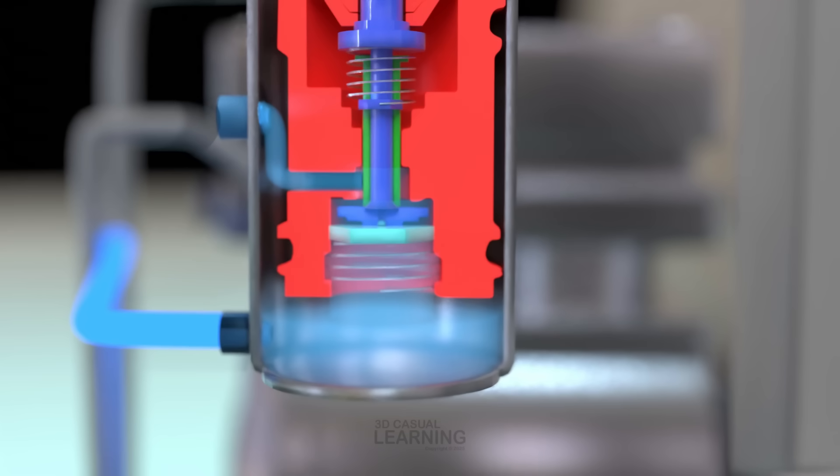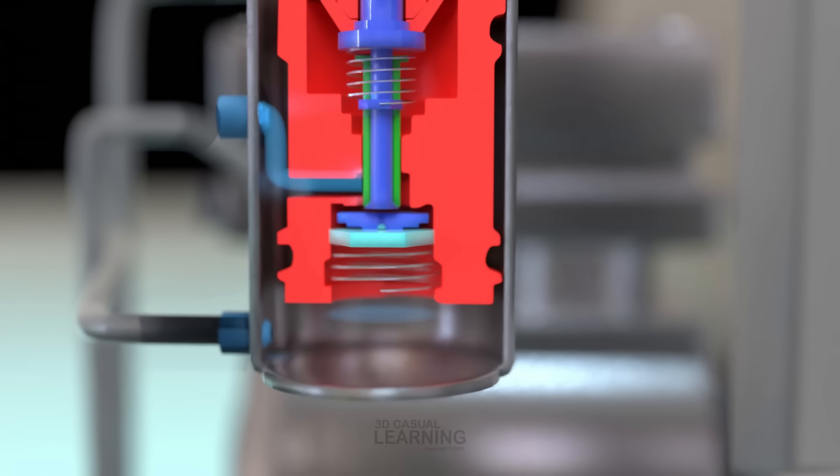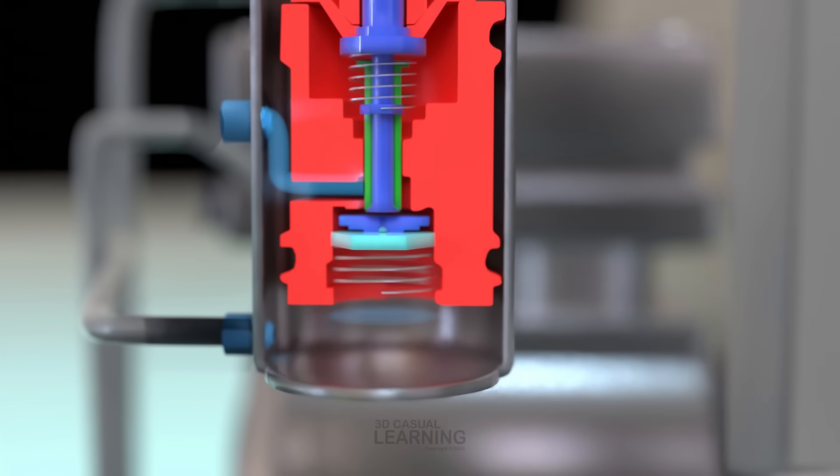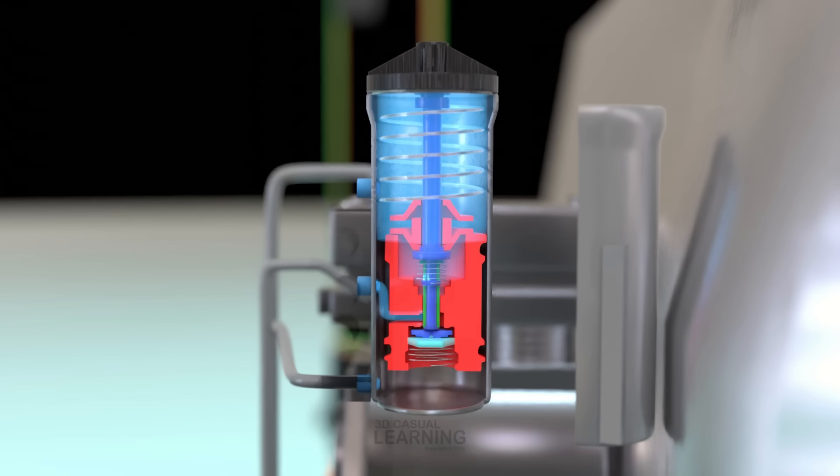Once the system's pressure drops to the cut-in point, typically around 100 psi, the governor spring pushes the piston back. This closes the inlet valve and opens the exhaust, allowing the unloader air to vent out through the governor. With the pressure gone, springs inside the compressor return the unloader pistons to their normal position, seating the inlet valves and compression resumes.